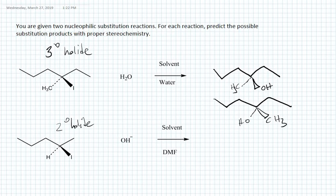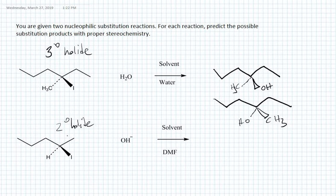All the indicators point to an SN2 mechanism. In SN2 reactions, strong nucleophiles are better, and a polar aprotic solvent is also favorable for SN2. The substrate is not as hindered as a tertiary halide. The strong nucleophile and the solvent indicate this is likely an SN2 reaction. In SN2 reactions, the stereochemistry proceeds with inversion of configuration when we have a chiral substrate. This carbon has four different groups, so it is definitely chiral.